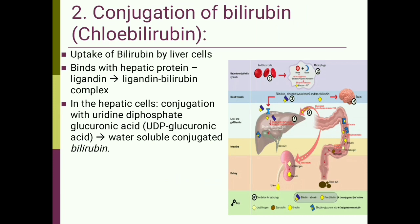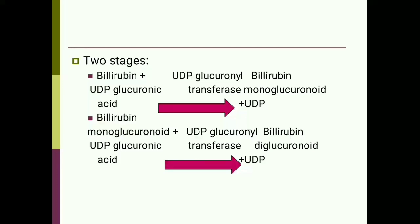In hepatic cells, conjugation takes place in two steps. First, bilirubin combines with UDP-glucuronic acid in the presence of the enzyme UDP-glucuronyl transferase to form bilirubin monoglucuronide. This bilirubin monoglucuronide again combines with UDP-glucuronic acid in the presence of UDP-glucuronyl transferase to form bilirubin diglucuronide. This reaction is catalyzed by glucuronyl transferase, which is present in the hepatic microsomes — the smooth endoplasmic reticulum of liver cells.